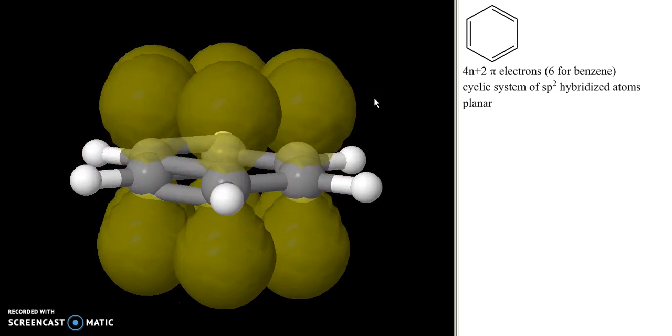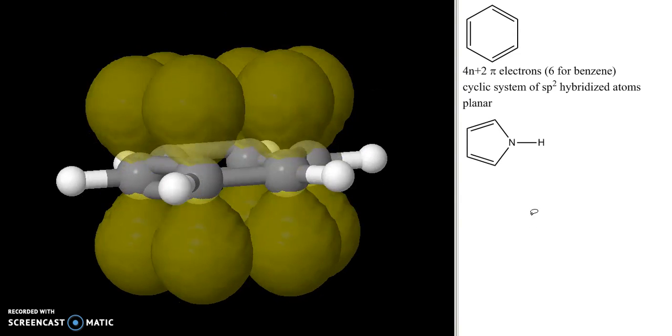However, for a compound like pyrrole, which is aromatic, it's harder sometimes to recognize that it is aromatic. We see four pi electrons, we see this nitrogen that appears to be sp3 hybridized because there's a lone pair on it.